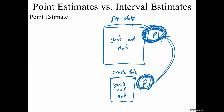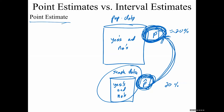p is unknown — it's the number I'm dying to know. p-hat is known because I have the sample data to calculate it. p-hat is my best guess for p — it's called a point estimate, a one-number guess. If 20% of the students in my class are married, I guess that 20% of all Rio Hondo students are married. But a point estimate is almost always wrong.